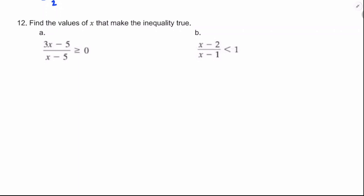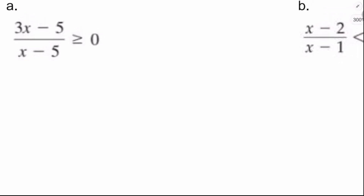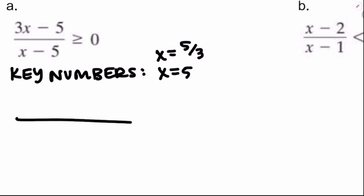Now we wrap up with rational inequality practice. We built this skill last time and want to maintain it. First, set the inequality to zero and identify key numbers: x equals 5 is a zero of the denominator, and x equals 5 thirds is a zero of the numerator. Make a sign chart with a number line. Since 5 is bigger than 5 thirds, choose test points: x equals 0, x equals 3, and x equals 10.